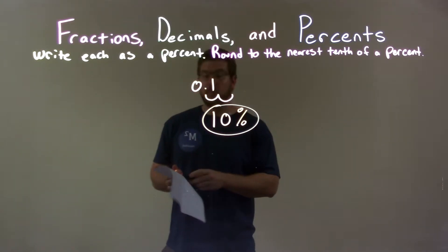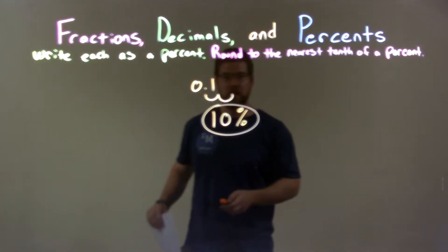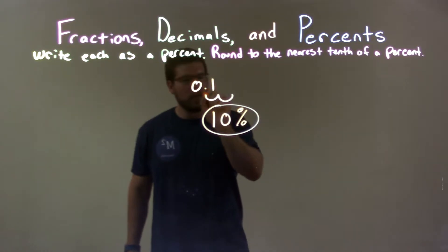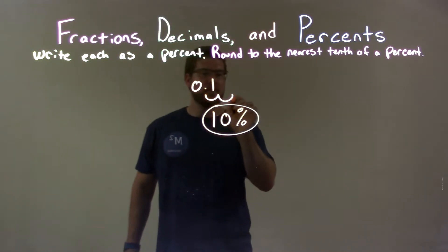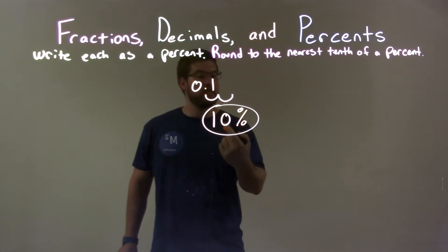So quick recap, we're given 0.1 and we have to write that as a percent. 0.1, we take the point, move the decimal two spots to the right to get to a percent. That becomes a 10. So our final answer is just 10 percent.